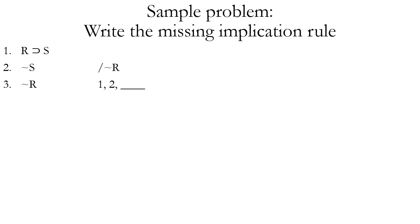Now let's look at some sample problems. The first few will have proofs where we're given a new line based on premises and have to determine which inference rule was used to justify that line. In this case, we have two premises — if R then S, and not S — and the conclusion is supposed to be not R. We can get to not R in one step using those two premises. Which rule do we use?